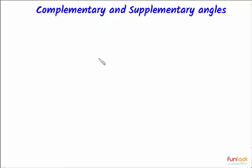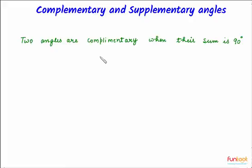Complementary and Supplementary Angles. Now let's learn about complementary and supplementary angles. Two angles are complementary when their sum is 90 degrees. If two angles add up to 90 degrees, then they are said to be complementary angles.